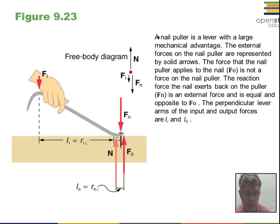We have a crowbar here. It has a pivot point down here, a short distance to the nail that we want to pull out of the board, a long distance to where the force is applied.